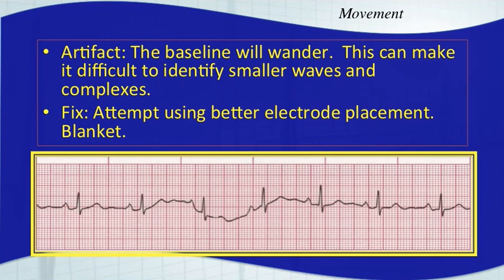Movement is probably the most frequent type of artifact, and you're going to get what might look like a wandering baseline. This makes it very difficult to accurately interpret an EKG rhythm. It's important to try to keep your patient from moving too much. If they're shivering, provide them with a blanket. Try to keep the wires underneath their arms and the EKG electrodes off areas of a lot of movement. We've moved limb lead electrodes up to the torso, but if you've got a patient that's tachypneic or breathing really hard, that might move the electrodes a lot too. So you might want to move those top ones out to the deltoid muscles and those bottom electrodes down to the upper thigh area.